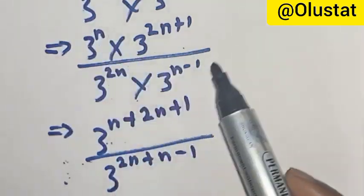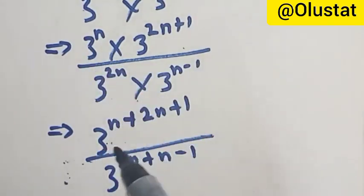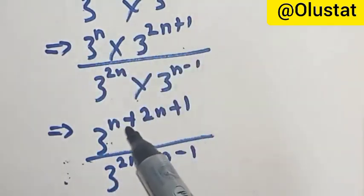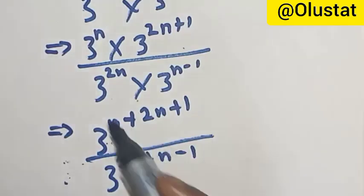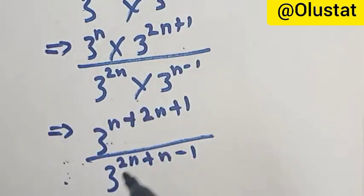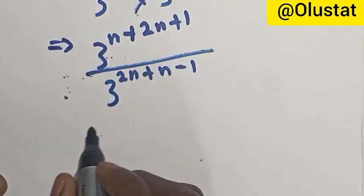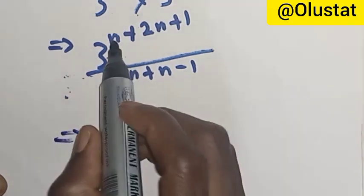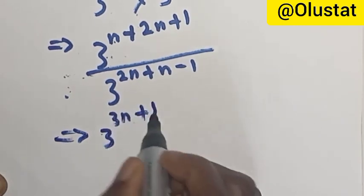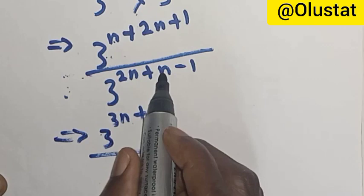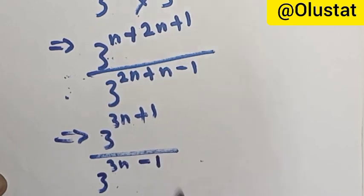We have 3 raised to power n multiplied by 3 raised to power 2n plus 1 — since they have the same base, we add the exponents: n plus 2n plus 1. The same rule applied to the denominator gives 2n plus n minus 1. So the numerator becomes 3 raised to power 3n plus 1, and the denominator becomes 3 raised to power 3n minus 1.